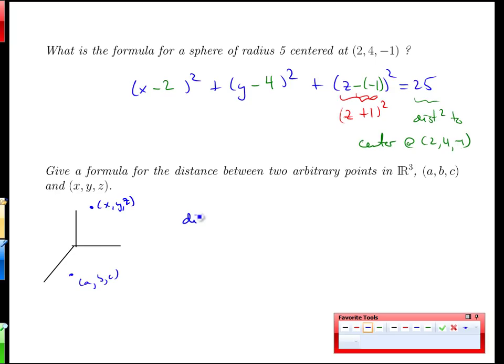The distance squared between them, well think of what we just did here. Here we said the distance from x to 2, y to 4, and z to 3, that total distance between the point x, y, z and 2, 4, 1 is equal to a constant. The distance squared then is going to be x minus a, y minus b squared and z minus c squared. So the distance between any two points is just a square root of all that together.